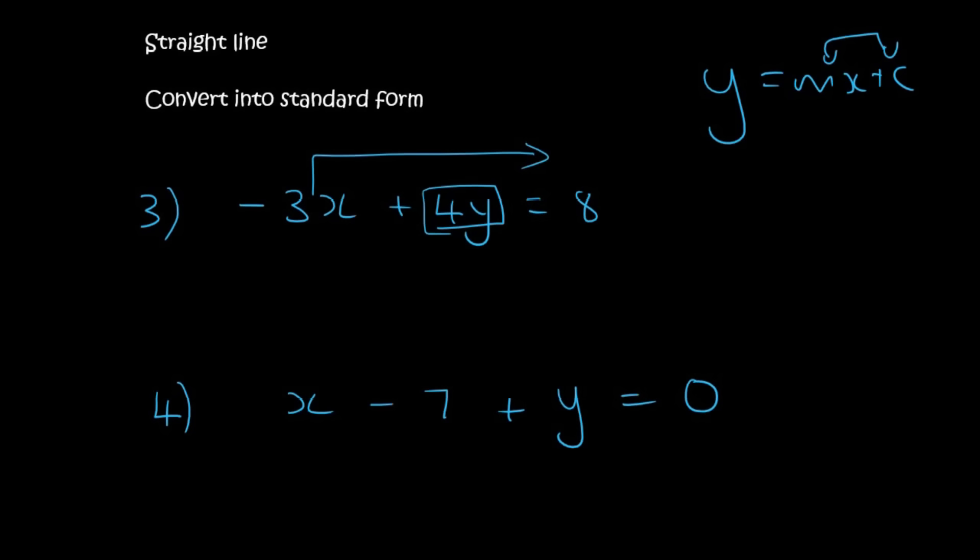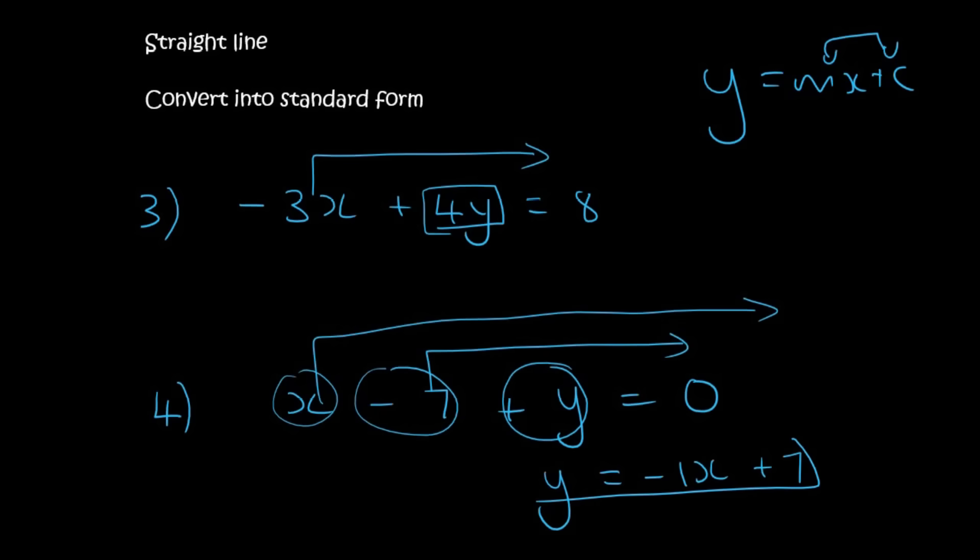Then with this next one, you want to get the y by itself, so it's already positive. So we'll take the 7 and the x to that side. So the x will become a negative. You can say negative 1x if you want. And this minus 7 will become plus, or positive. And there we have y by itself. That is called standard form.